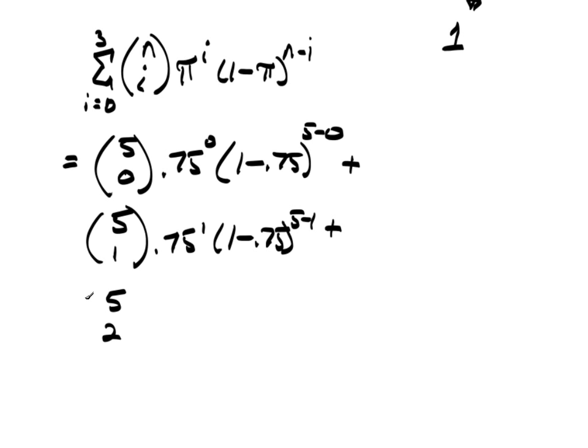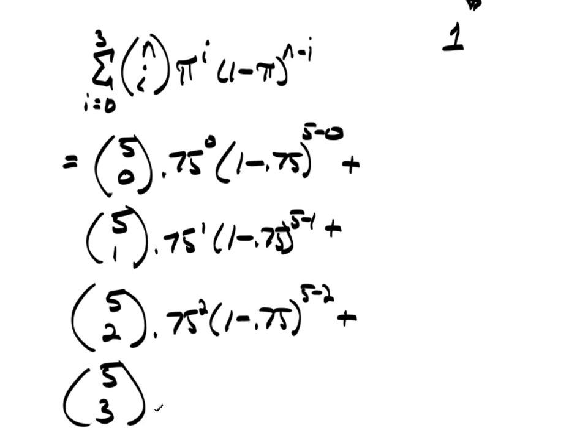Plus, 5 choose 2, 0.75 squared, times 1 minus 0.75. This is the 5 minus 2, which is cubed. So, notice the fraction, or these exponents, whenever you add them up, you always get 5. Plus, 5 choose 3, times 0.75 cubed, times 1 minus 0.75 to the 5 minus 3.